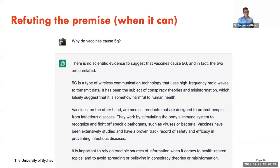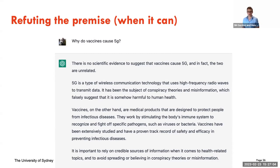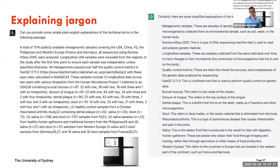ChatGPT can also, to some extent, filter out harmful misinformation. If you enter something like 'why do vaccines cause 5G?' it responds that there's no scientific evidence suggesting vaccines cause 5G — that's probably the most statistically likely response it has. We also don't know to what extent they've entered any manual filtering.